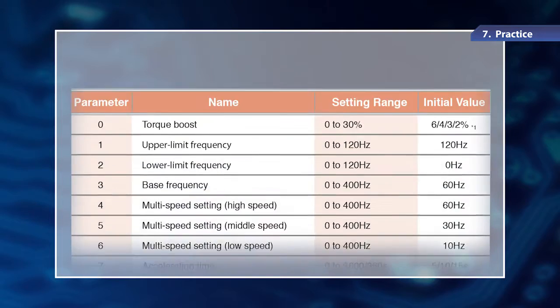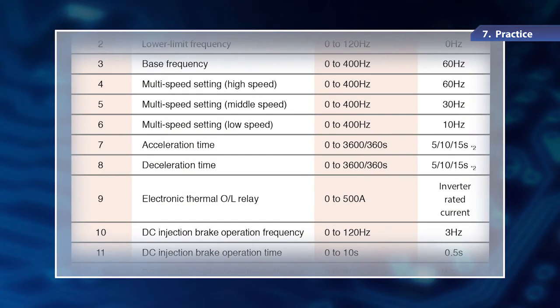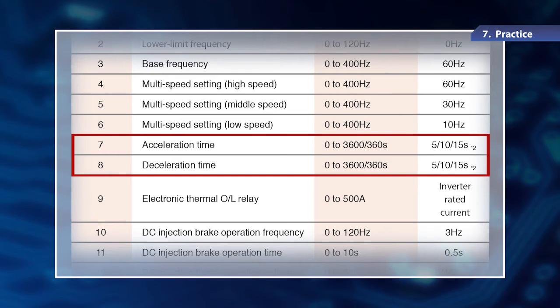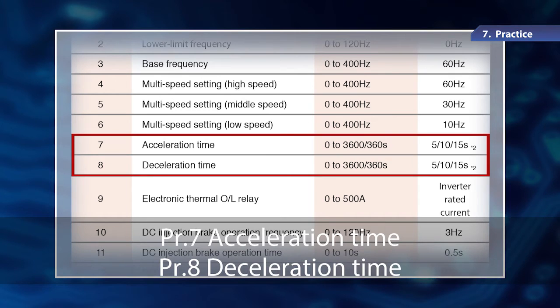As a useful inverter function, I'd like to show you the parameters to set the acceleration time and deceleration time to start or stop the motor. Parameter 7 is for acceleration time, and parameter 8 is for deceleration time.